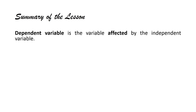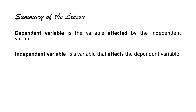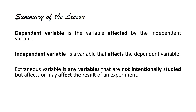So the summary: the dependent variable is the variable affected by the independent variable. The independent variable is a variable that affects the dependent variable. And the extraneous variable is any variable that is not intentionally studied but affects or may affect the result of an experiment. Klarong-klaro po — any other variable that may affect the outcome of the study, although not intentionally studied, is called the extraneous variable.